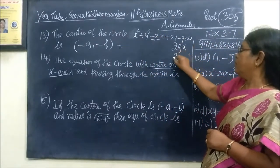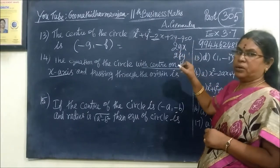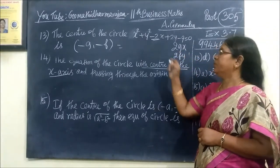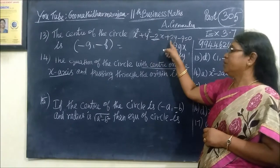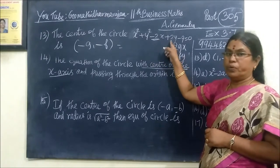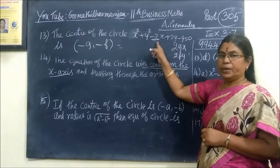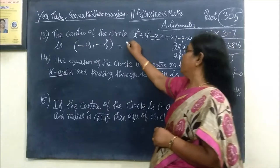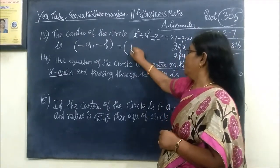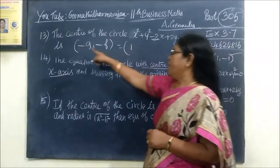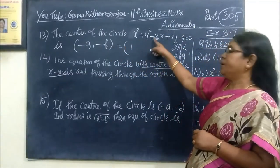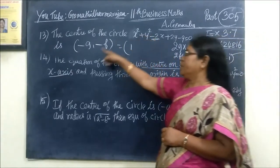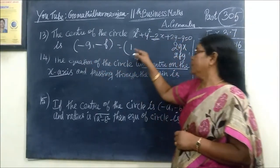Looking at the equation, the coefficient of x is 2x, and the coefficient of y is 2y. Using the formula, 2g corresponds to -2x, so g = -1. The x-component of the center is -g, which gives us 1.